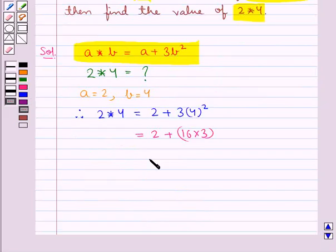Which is equal to 2 plus 48, that is equal to 50. Thus we get 2 star 4 is equal to 50.